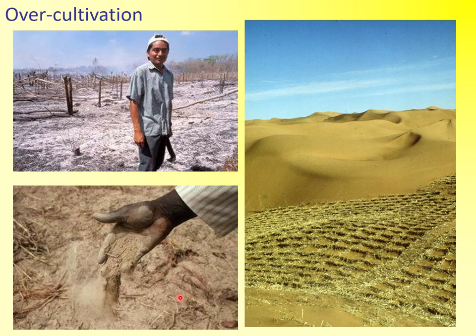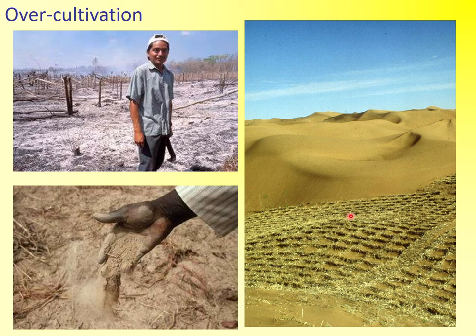Over-farming is the next big cause. Because there are so many mouths to feed, you see situations like the one on screen — pure desert. Marginal land is a term that refers to land on the edge of a desert that is still technically farmable but is dying. The quality of the soil is poor, and the farmer is getting every last inch of nutrition out of it. In another season or two, that soil will be dead and will become desert. Over-farming tires the soil out.